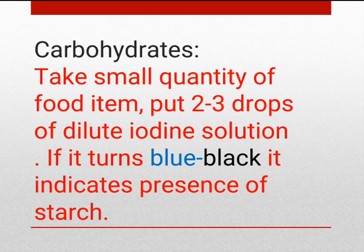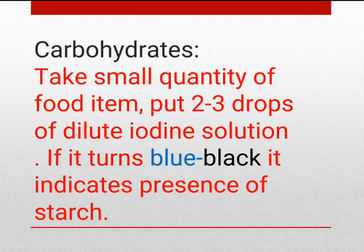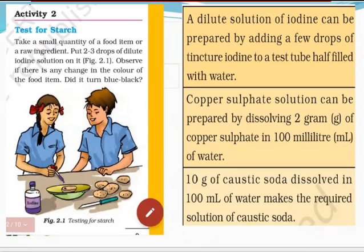First is the test for carbohydrates. Take a small quantity of food item and put 2-3 drops of dilute iodine solution on it. If it turns blue-black in colour, that is an indication that starch is present. In this picture you can see potatoes — after the iodine solution is added, the colour turns blue-black, which means it has carbohydrates.